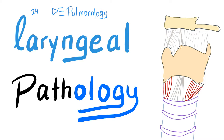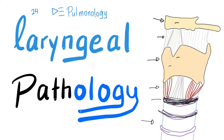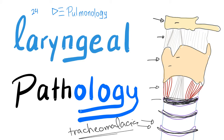Let's review some anatomy. So what is this hyoid bone? This is the thyroid cartilage. The ligament between the hyoid and the thyroid is called the thyrohyoid ligament. This is the cricoid cartilage, and the ligament between the thyroid and the cricoid is the cricothyroid ligament. Then this is the trachea, with cartilage rings preventing it from collapsing. That mechanism is absent in a disease called tracheomalacia.